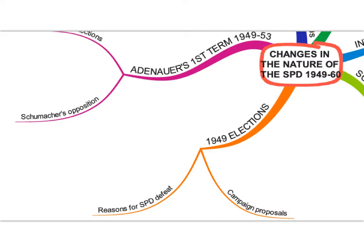The 1949 elections — the first Bundestag elections of the new West Germany — were largely fought over economic issues. It was a very narrow victory for the CDU with 31 percent against the SPD's 29 percent. Let's now look at those elections from the viewpoint of the SPD.